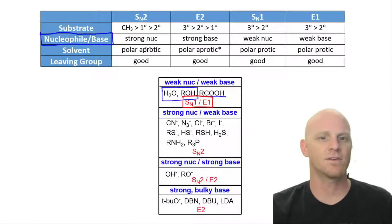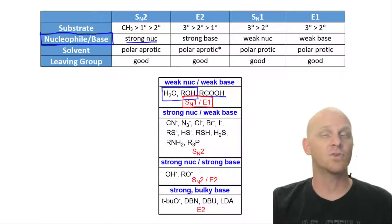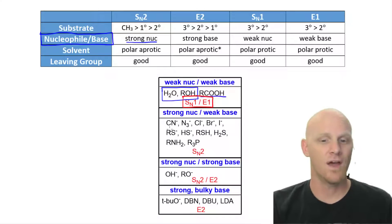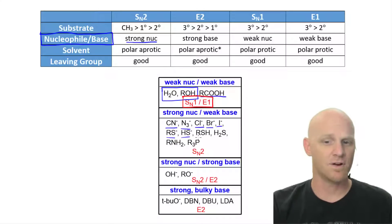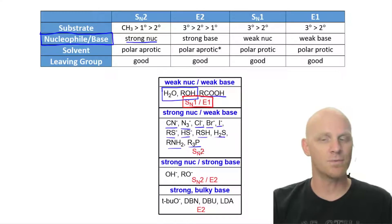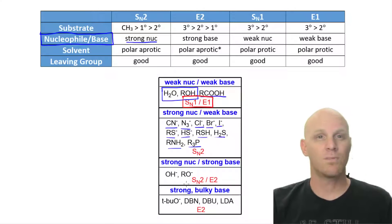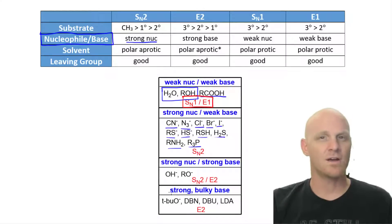Next up, we've got reactions with strong nucleophiles that are only strong nucleophiles. Being a strong nucleophile, they'll do SN2. But being weak bases, we don't have to worry about E2 competing, so largely they're just going to do SN2. Most of these strong nucleophiles have a negative charge. But there are some on sulfur, nitrogen, or phosphorus that are neutral and still strong nucleophiles. Typically if you've got a negative charge on anything other than oxygen, it's probably just a strong nucleophile.